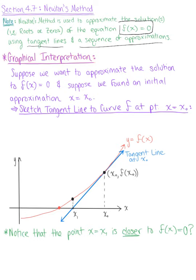To better understand this method, let's look at the graphical interpretation first. We want to approximate the solution of f(x) = 0, and suppose that we found an initial approximation at x₀. Using x = x₀, we want to sketch a tangent line to the curve f at this point x = x₀.